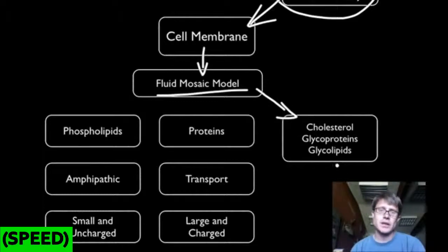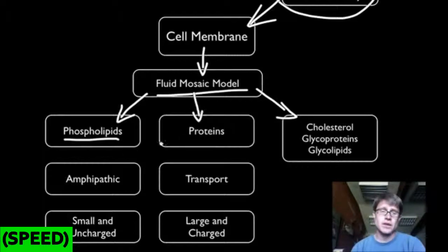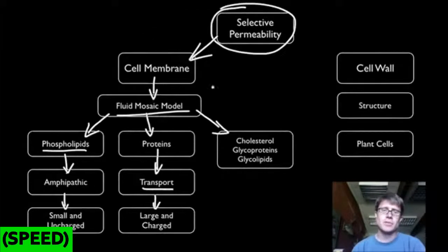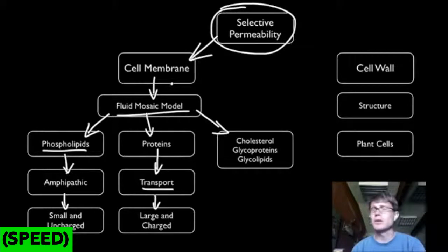Now, there are a few things, cholesterol, glycoproteins, and glycolipids that are found within the cell membrane that are important. But the majority of the important things in a cell membrane are the phospholipids, those are going to be the fats, and then the proteins. And so the phospholipids are amphipathic. That means they have a part that likes water and a part that hates water, or they have dual nature. And what they do is they allow small and uncharged particles to move through it. And proteins are going to be found within the membrane.